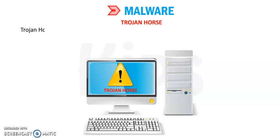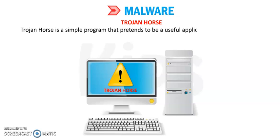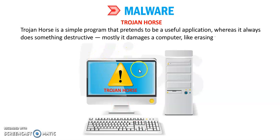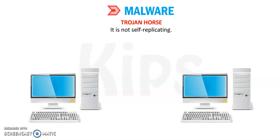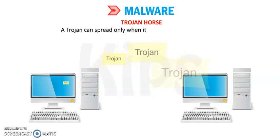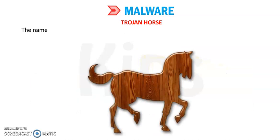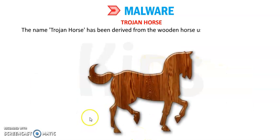A virus cannot damage computer hardware physically. It cannot affect write-protected media like CD-ROM, and it cannot affect compressed files. Now, there are different types of viruses. First, we will discuss the Trojan Horse. It is a very popular type of virus. A Trojan Horse is a simple program that pretends to be a useful application while always doing something disruptive. Mostly, it damages a computer by erasing files. It is not self-replicating — it can only spread when copied by others.